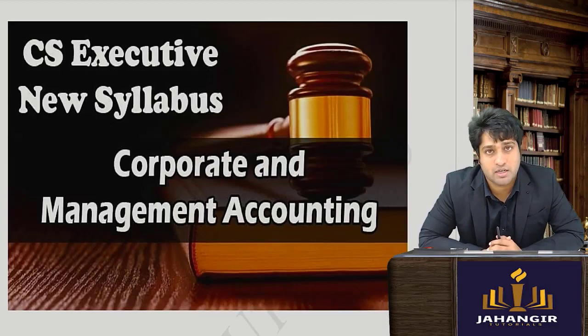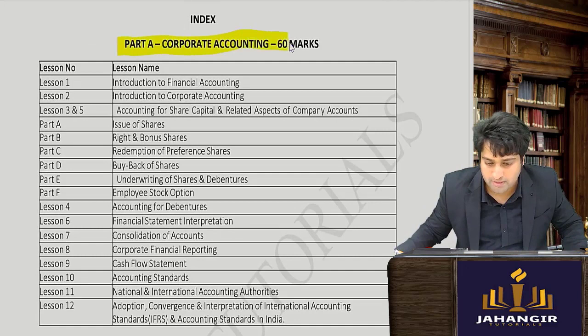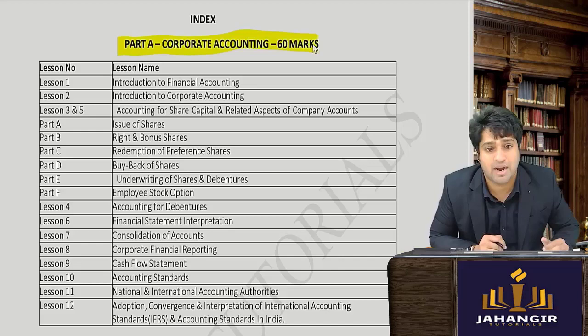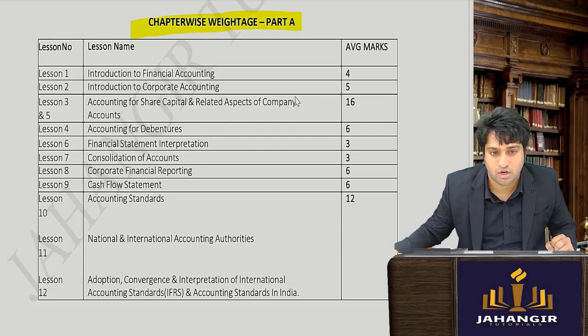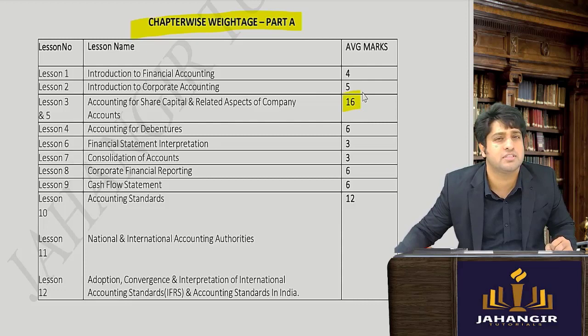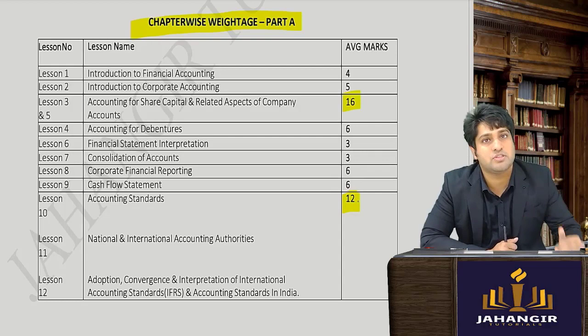For Corporate and Management Accounting, it is divided into Part A and Part B. Part A covers all corporate accounting lessons and carries 60 marks, while Part B is 40 marks. In Part A, share and share capital comes for around 16 marks — the highest weightage — covering issue of shares, buyback, redemption, etc. Accounting standards and theory chapters also carry significant weight in Part A.